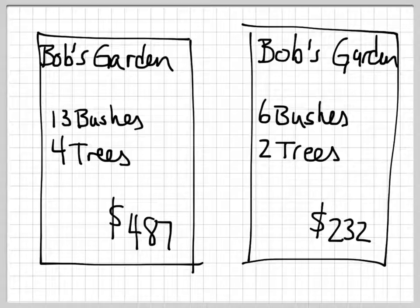You and a friend go to Bob's Garden Center and you buy a total of 13 bushes and 4 trees and get a bill for $487. Your friend buys a total of 6 bushes and 2 trees and gets a bill for $232. Bob's Garden doesn't list the price per item. So the question is, how much did you pay for the bushes and how much did you pay for the trees?